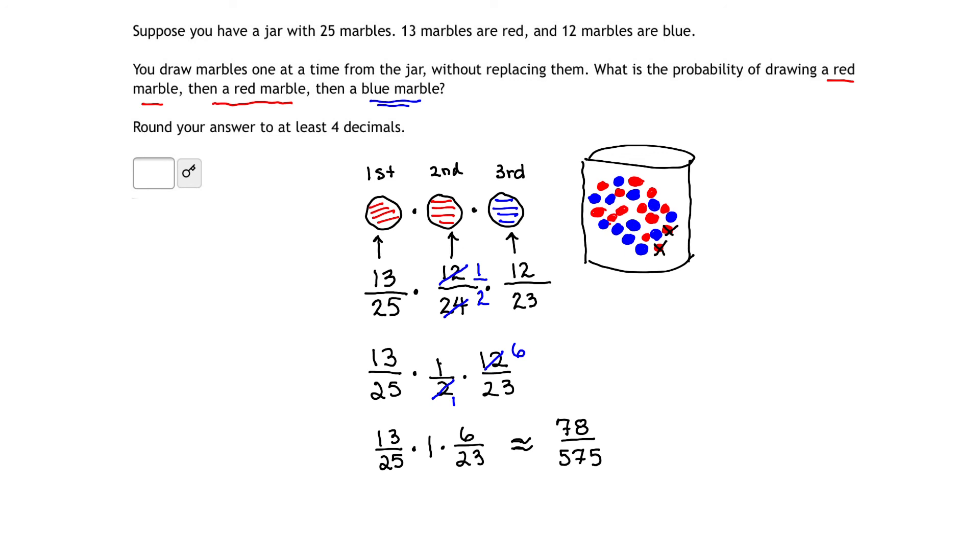Taking 78 divided by 575, we get the approximate decimal of 0.135652, etc., etc., etc., etc., rounding to at least 4 decimals means we're going to go at least to this place. So our answer would be 0.1357.